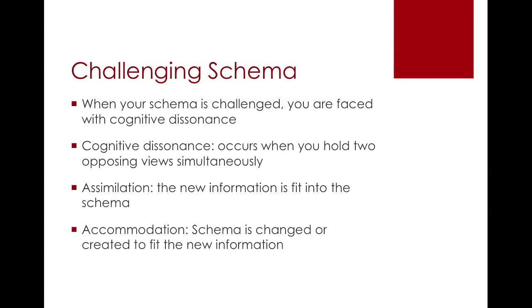The previous example showed a situation where a person's schema is challenged. Cognitive dissonance forms, and cognitive dissonance is when you hold two opposing views simultaneously. The person must then assimilate or accommodate that information. When that happens, we see growth or learning by that individual. If we did not have this process, or if it was not challenged, the individual would never have known what a dog was or looks like.